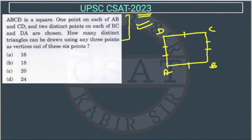How many distinct triangles can be drawn using three points as vertices out of these six points? So how many points are there? One, two, three, four, five, six. We are having six points. So out of these six points, how many triangles we can make?